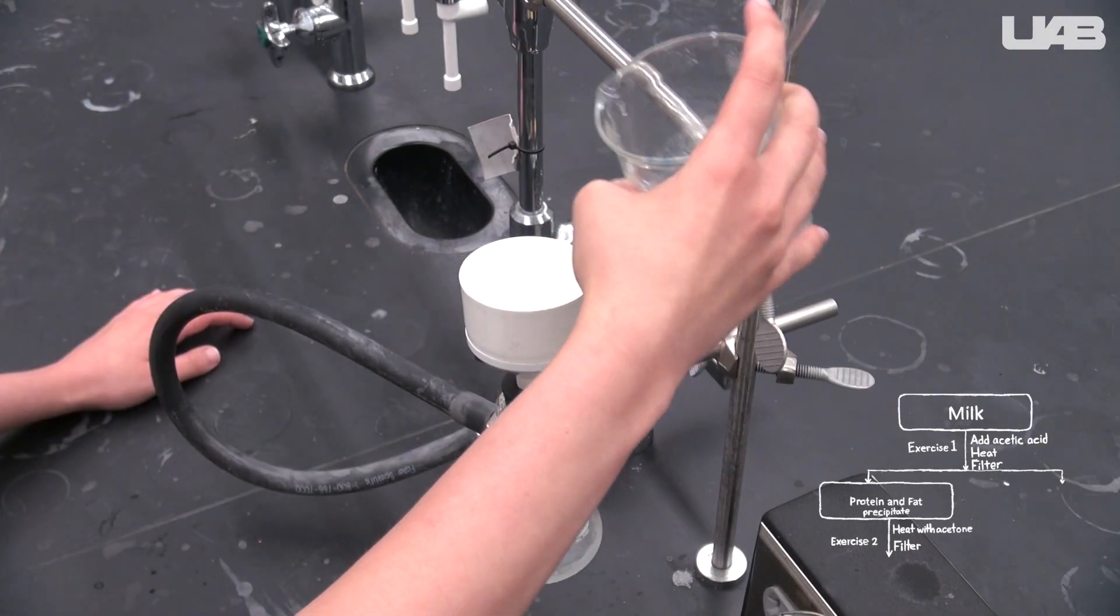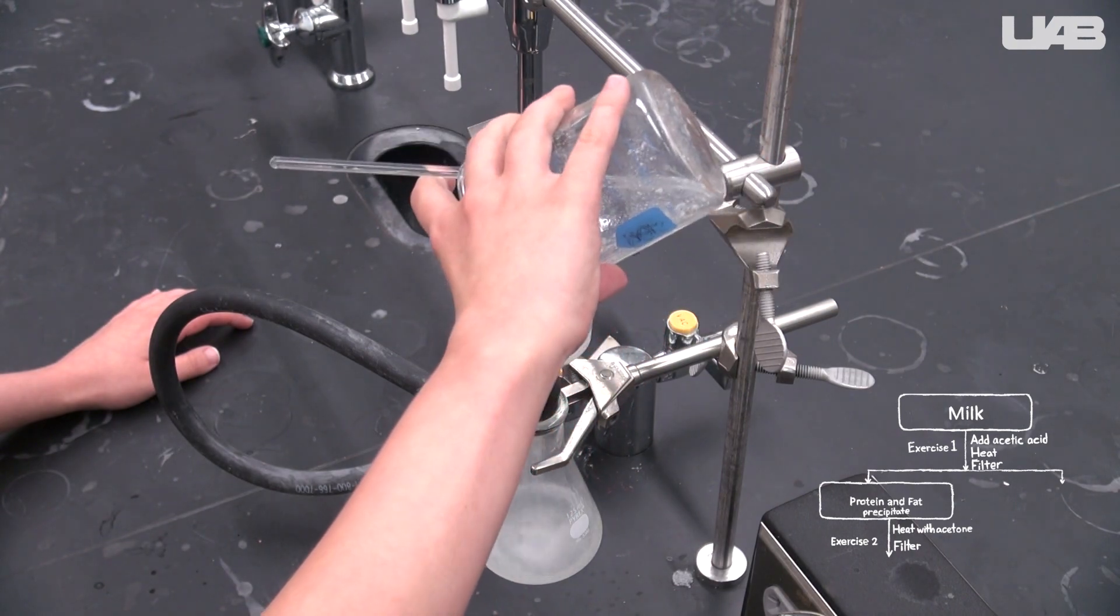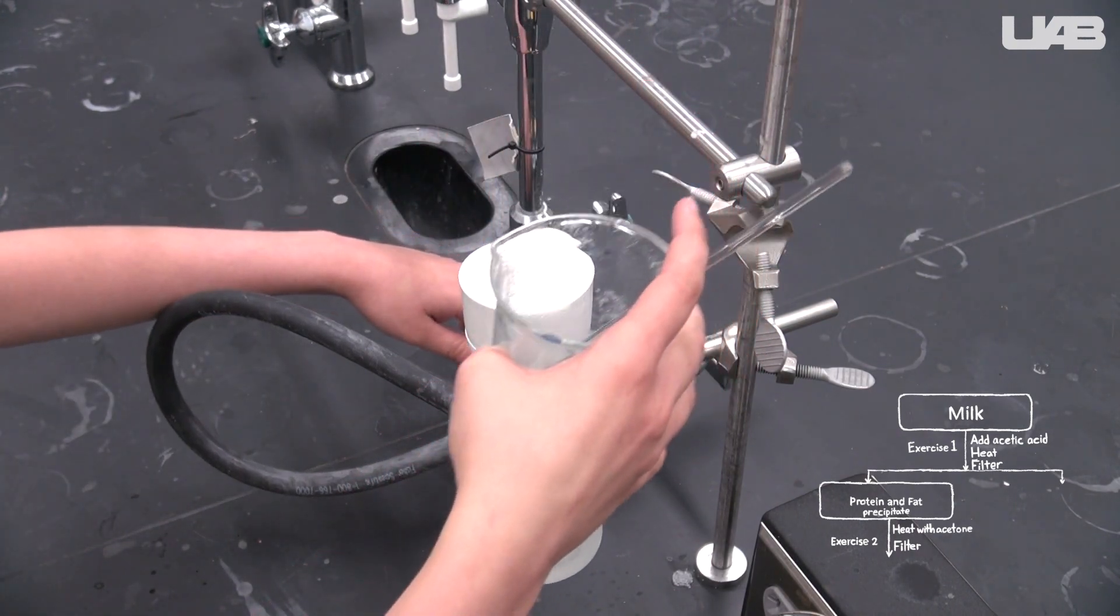When the solid starts flowing in, swirl the beaker and quickly empty it into the funnel to get as much solid as possible out of the beaker.